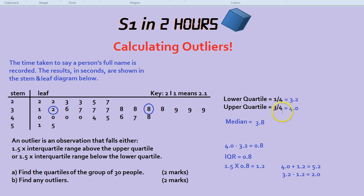The upper quartile is three quarters the way through the group. So we would do 30 divided by 4 and then times by 3. 30 divided by 4 is 7.5. 7.5 times by 3 would be 22.5. Again we've got a decimal so we round up to 23.